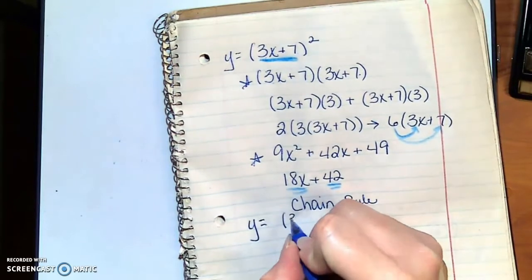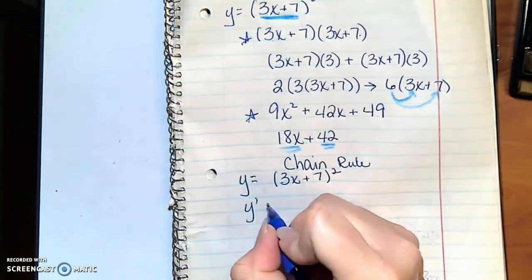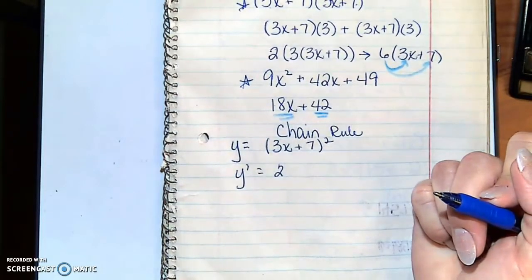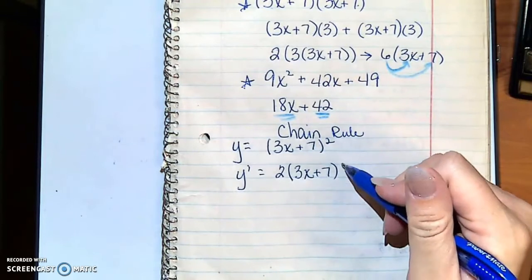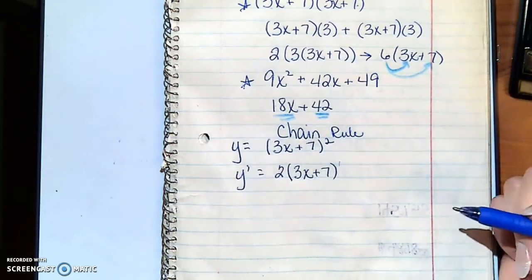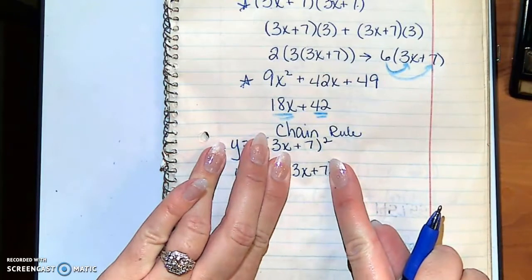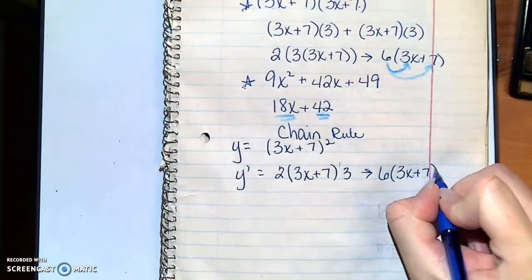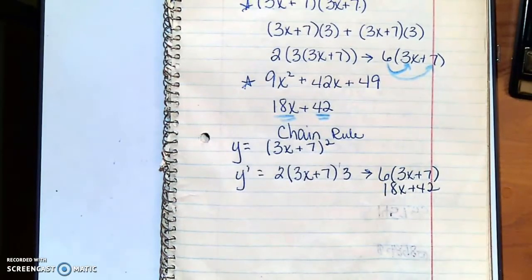So I have y equals 3x plus 7 squared. Chain rule says this: I am going to drop your exponent out front, just like what we've always been doing, times what's sitting there without changing it, drop your exponent by 1. And then the new part is times the derivative of the inside. The derivative of the inside is 3, which means if I rewrite that, I will have 6 times 3x plus 7, or 18x plus 42. So I get the same answer. The new part with chain rule is simply times the derivative of the inside.